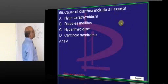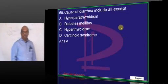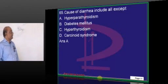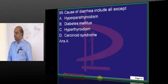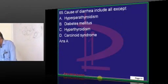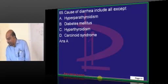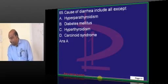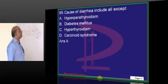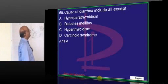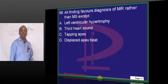What is the cause of diarrhea? Diabetes, hyperthyroidism, and carcinoid syndrome — many conditions can lead to development of diarrhea.